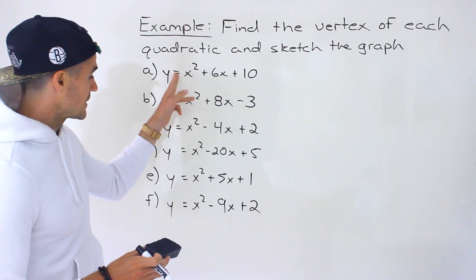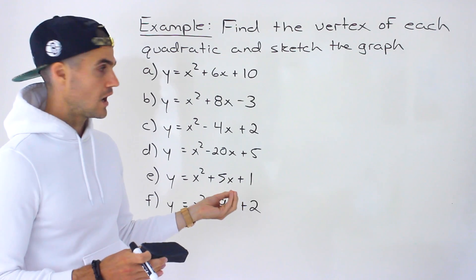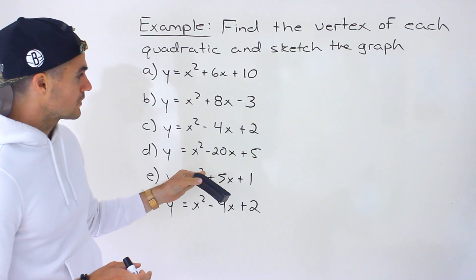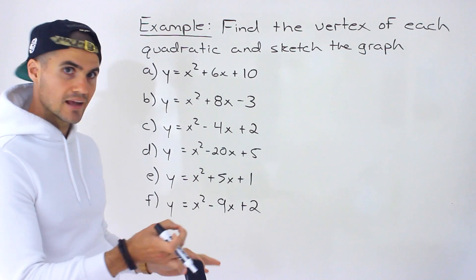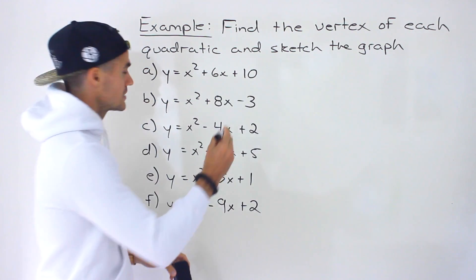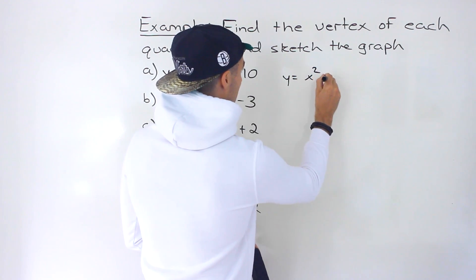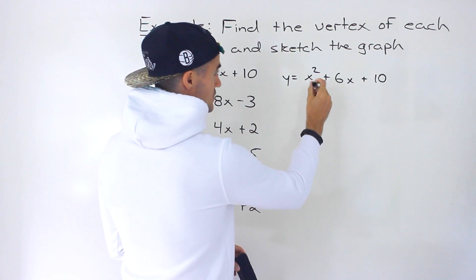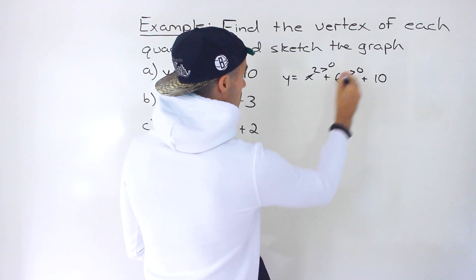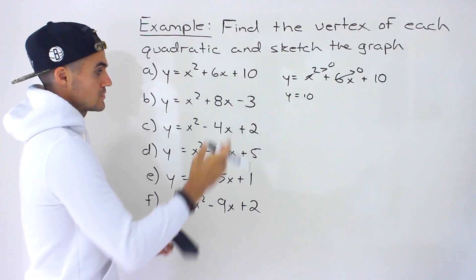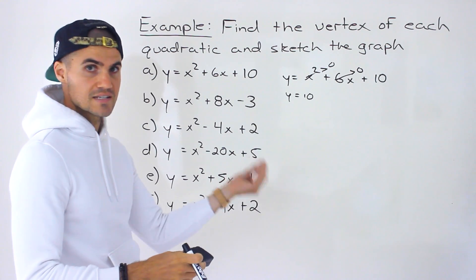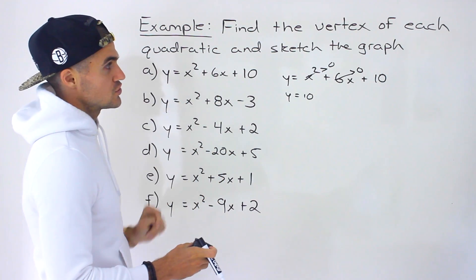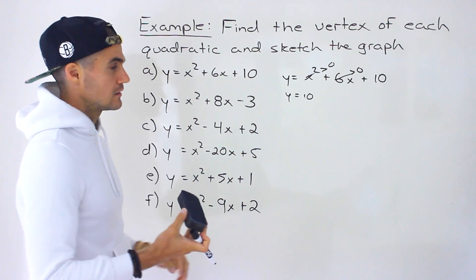Because the a value is just one, all of these quadratics are going to be opening up — they'll all have a minimum vertex. From standard form, the easiest characteristic to identify is the y-intercept, which is always the c value. If we plug in zero for x, the x² and x terms go to zero and we're left with just c. So in a standard form quadratic the c value is always the y-intercept, and we'll include that along with the vertex for each graph.